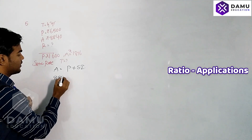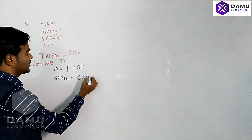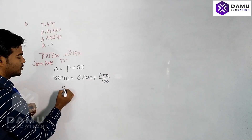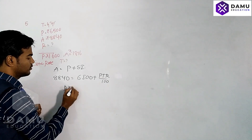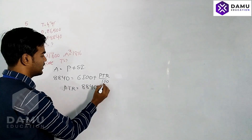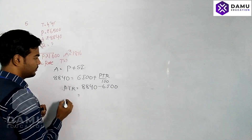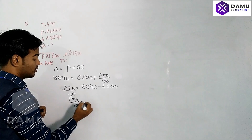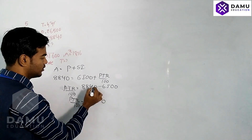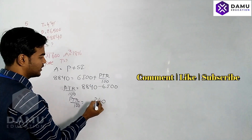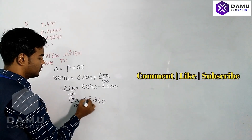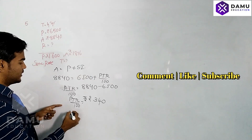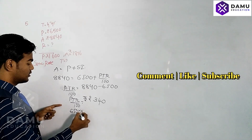Amount is 8840, principal is six thousand five hundred, plus PTR by hundred. So simple interest, that is PTR by hundred, will be equal to eight thousand eight forty minus six thousand five hundred. PTR by hundred equals two thousand three hundred and forty.